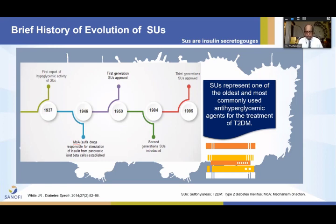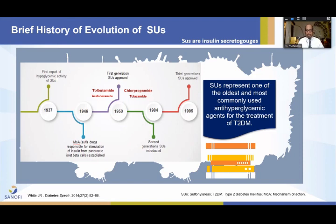So they have been available for the last 70 years. These first generation sulfonylureas — tolbutamide and chlorpropamide — are no longer used. In 1984 we had the second generation sulfonylureas: glibenclamide, which is also not commonly used these days, and glipizide and gliclazide.